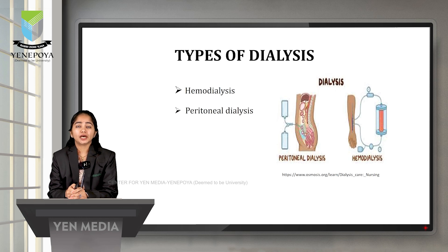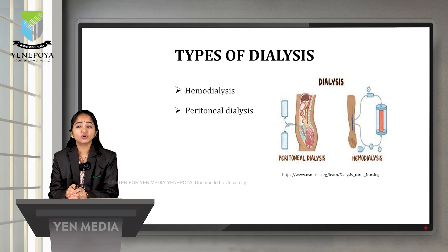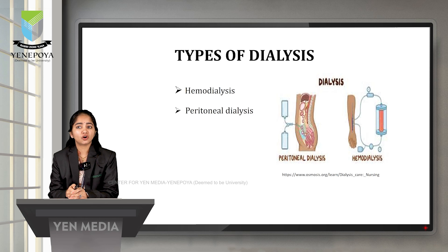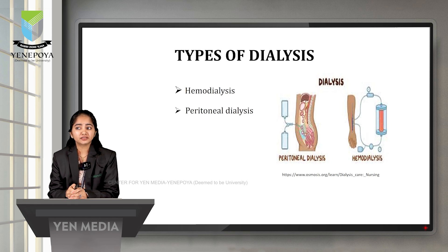There are two types of dialysis: hemodialysis and peritoneal dialysis. In hemodialysis, we use an extracorporeal circuit or machine and a dialyzer, also called the artificial kidney, where filtration occurs inside the dialyzer. In peritoneal dialysis, we use the peritoneum — a thin membrane lining the abdominal cavity — as a filter to remove excess fluid and waste products from the patient's blood.